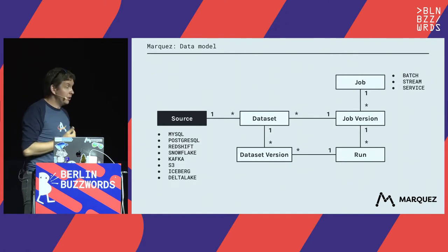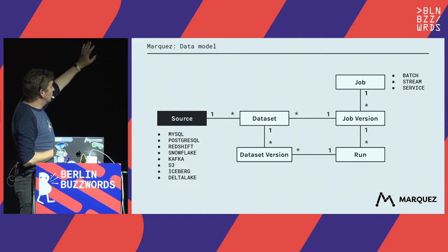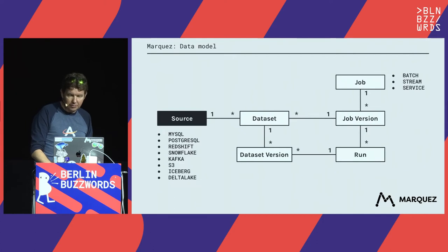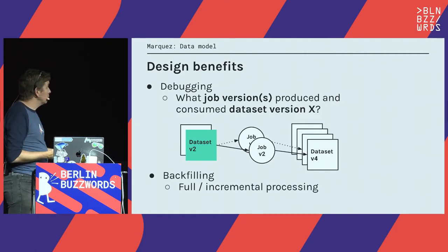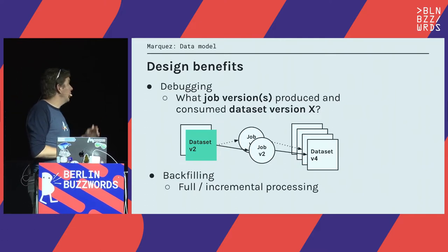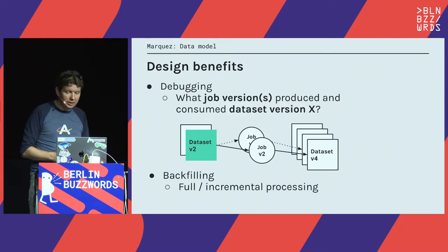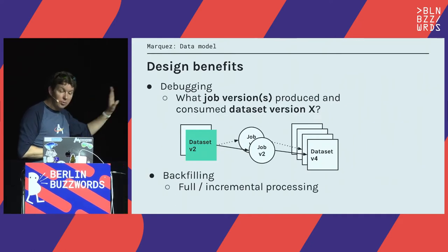A job may have multiple job versions, and a run is connected to the particular version of the job at the time it ran. A job consumes and produces data sets, and for a given run you know what version of the data set was consumed and produced. This model specializes data set sources — coming from databases, file systems, or various storage types — and jobs can be streaming or batch. The benefit of this versioned model is it's very useful for debugging, finding the root cause of problems, and understanding what changed.